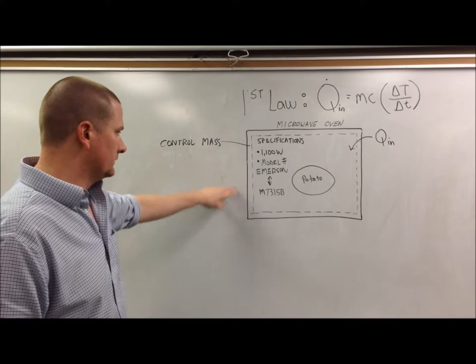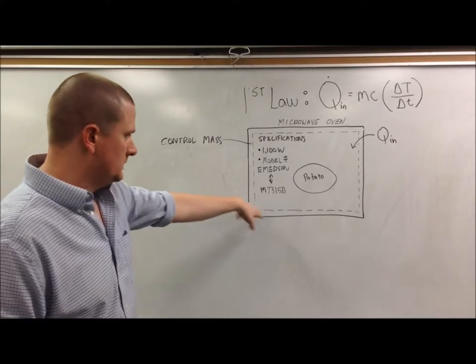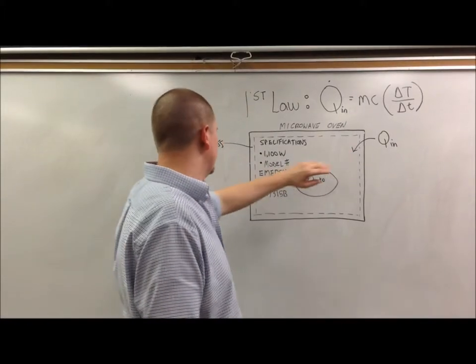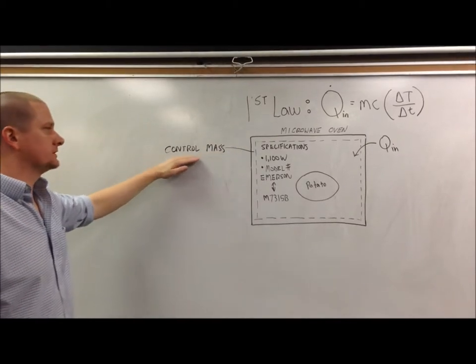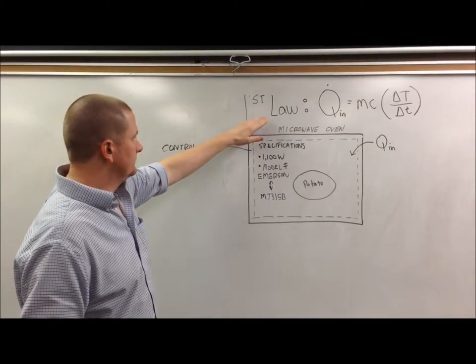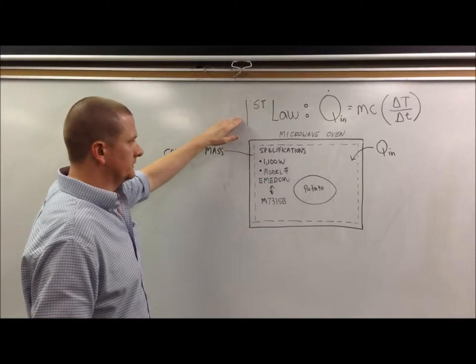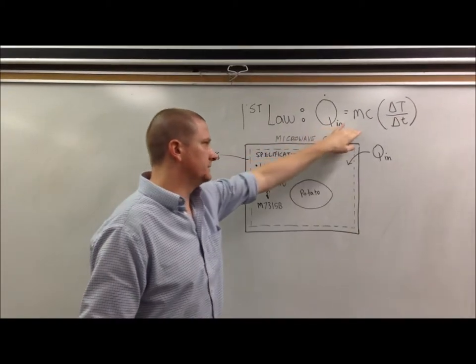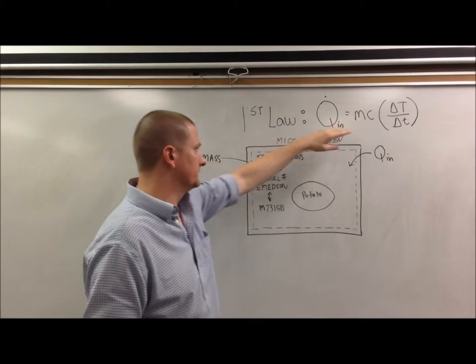So as you can see here, we have an overall schematic of the unit. We have our potato, we have our QN. We'll be utilizing a controlled mass approach in our first law analysis. And for the actual equation we'll be using for our first law, we have QN equals MC delta T over delta T.